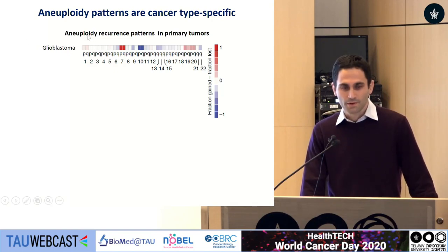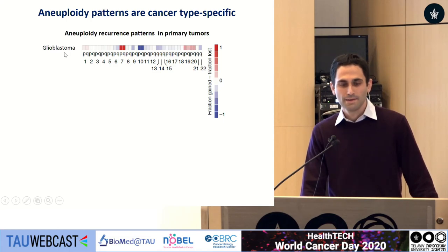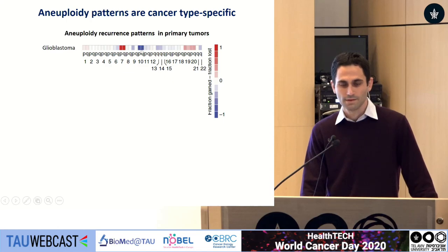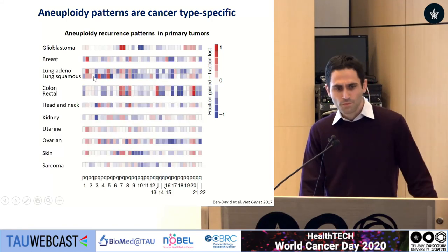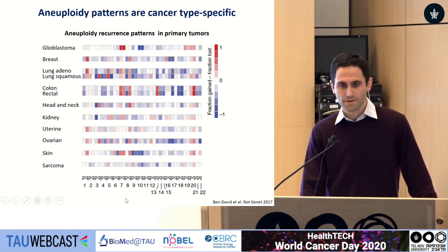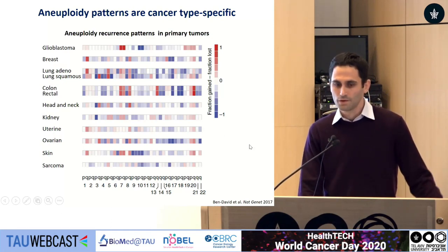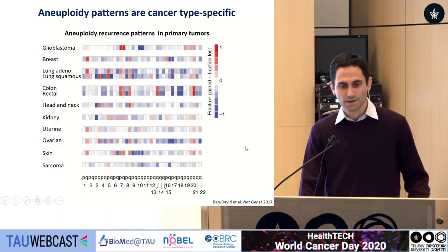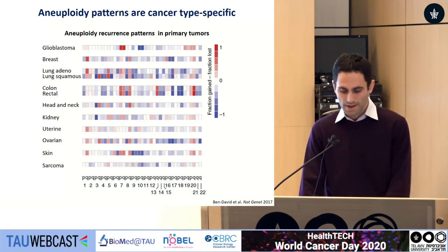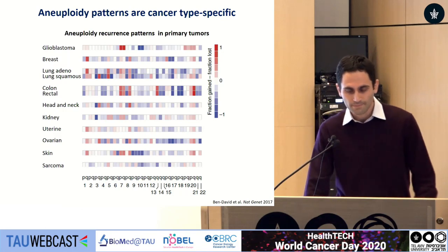One line of evidence is that aneuploidy patterns are very much cancer-type specific. Here on the x-axis are all the chromosome arms, and this is glioblastoma, the most common brain cancer. Gains are shown in red and losses in blue. In glioblastoma, trisomy of chromosome 7 and monosomy of chromosome 10 are very frequent. Looking across different tumor types, each tissue and cancer type has a characteristic pattern of aneuploidies, suggesting that specific chromosomal changes are being selected for in different tumor types.